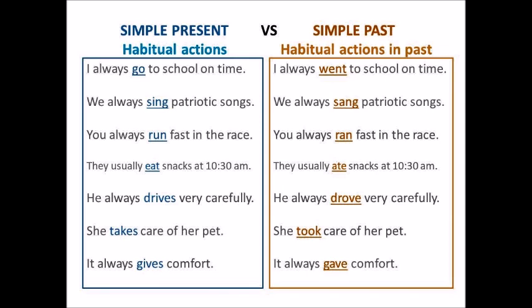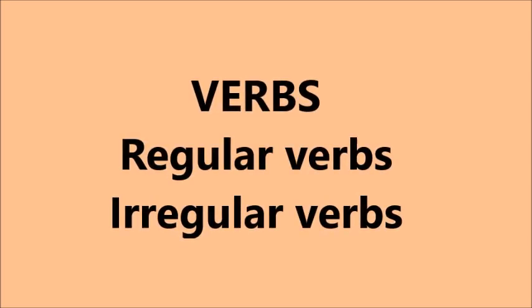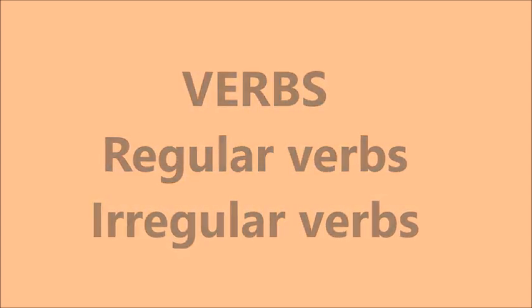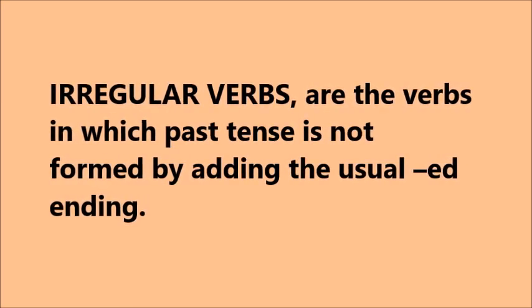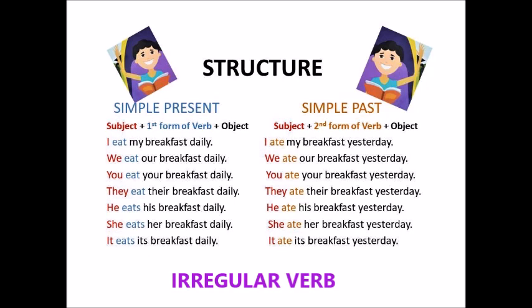Instead, in simple past tense, we use the second form of the verb with all the subjects. Let's have a look at the structure of simple present and simple past tense while using an irregular verb. In simple present tense: subject + first form of the verb + object. In simple past tense: subject + second form of the verb + object.